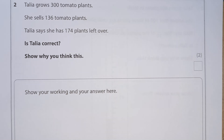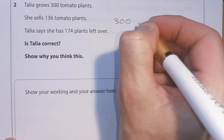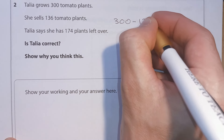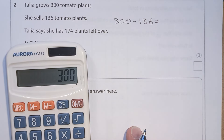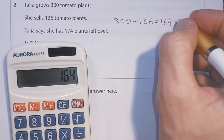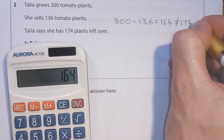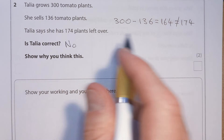Question two. Tanya grows 300 tomato plants and sells 136 tomato plants. Tanya says she has 174 plants left over. Is Tanya correct? If she started with 300 and we take away 136, we get 300 minus 136, which gives us 164 — which is not equal to 174. So she is not correct.